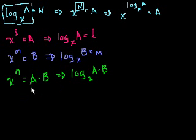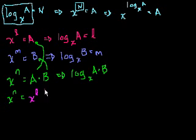Let's start with this right here. x to the n is equal to a times b. So how can we rewrite this? Well, a is this and b is this. So let's rewrite that. So we know that x to the n is equal to a. a is this, is x to the l. And what's b times b? Well, b is x to the m.